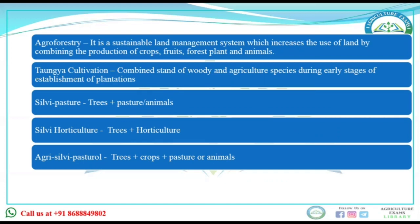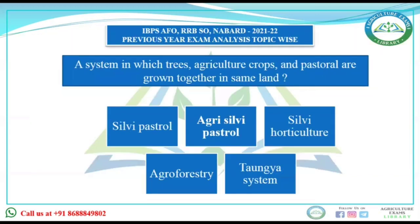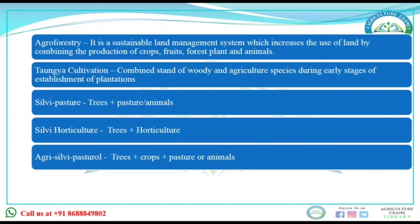Now, what was our question? A system in which trees, agriculture crops, and pasture are all present. Then according to the options, the answer will be Agri-Silvi-pasture.